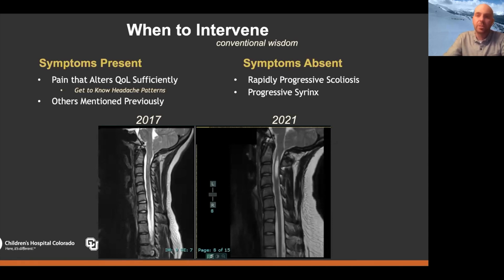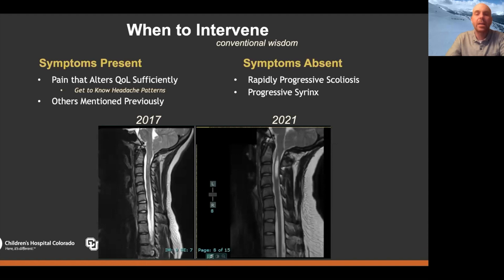Then you have patients who don't have symptoms, but some still benefit from surgery. A patient with progressive albeit asymptomatic scoliosis is someone where appropriate intervention can prevent continuing progression and potentially avoid a spine fusion. Similarly, a progressive syrinx — like the patient in this picture who has been basically asymptomatic but developed a progressive syrinx over a few years — raises the question of whether it's time to do a decompression, getting into the risk-benefit ratio of intervening for something that is asymptomatic at the time.